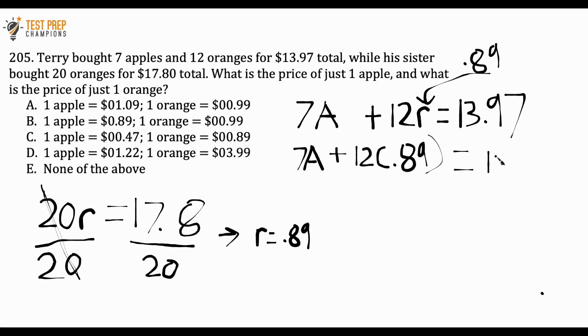Now we have 12 times 0.89. When you're doing this, you don't have to write out every single step like this; I'm just doing this for instructional purposes. In my calculator, if I do 12 times 0.89, I get 10.68. So 7A plus 10.68 equals 13.97.